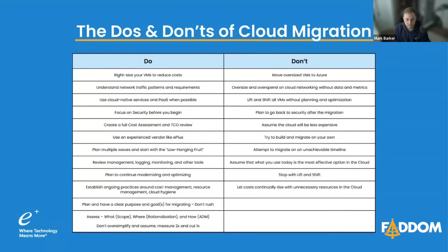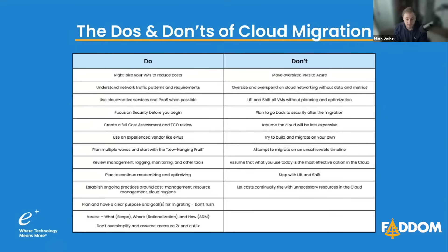Review your management, logging, monitoring, and other tools. Fathom is a great tool and gets you 90% of the way, but there are other tools you'll want to look at that Fathom doesn't necessarily touch on. Those tools are important and give you the metrics and visibility you also need for a successful migration.